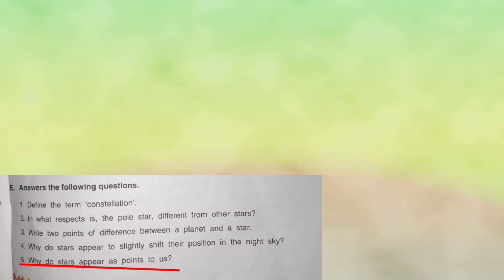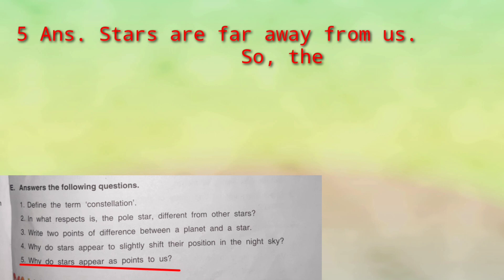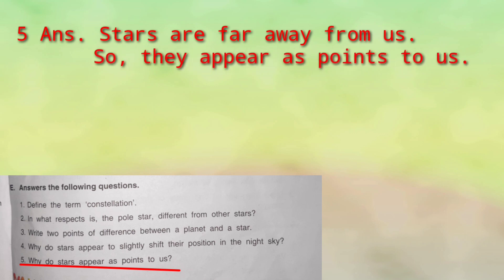Last question: why do stars appear as points to us? Stars hume points ke jaise kyun dikhai dete hain? Because they are very, very far away from us — woh humse bahut zyada door hain. Aur jo cheezein jitni door hoti hain, isliye stars hume points ki tarah dikhai dete hain.